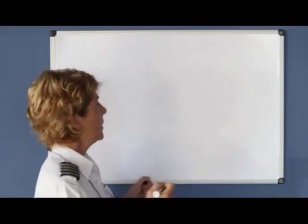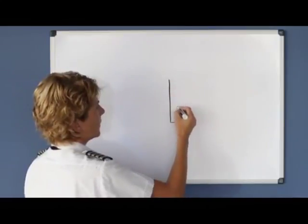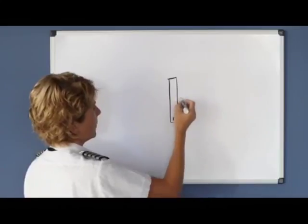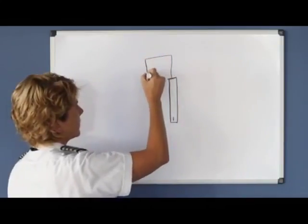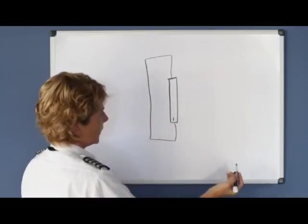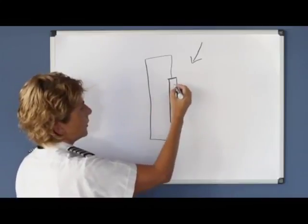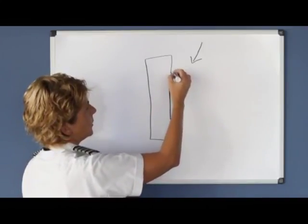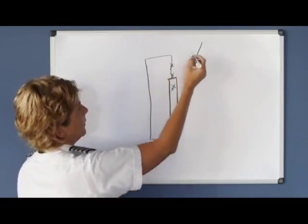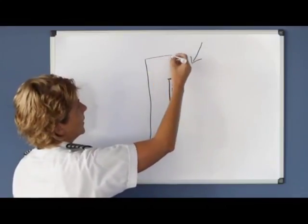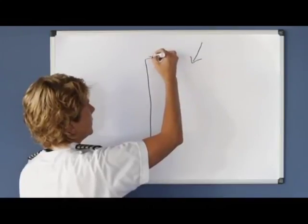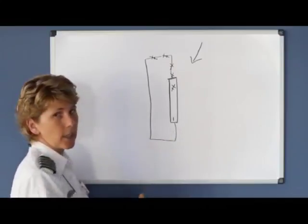The other ground reference maneuver is called a rectangular course. You could go out and find a field and fly a rectangular course around it, but usually the examiner just tests your skills in the traffic pattern. If you're in the traffic pattern and compensating for the winds — say this is runway one — the object is to fly a nice rectangular ground course around the traffic pattern. If the wind is blowing from a certain angle, as soon as you're airborne you need to allow your airplane to crab slightly into the wind to maintain your ground track so you don't get blown off course.